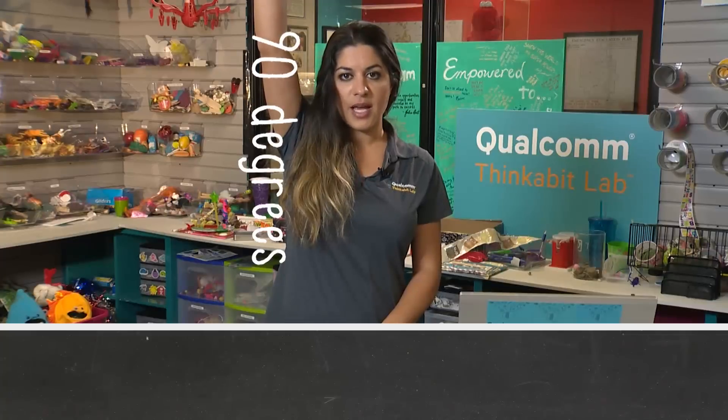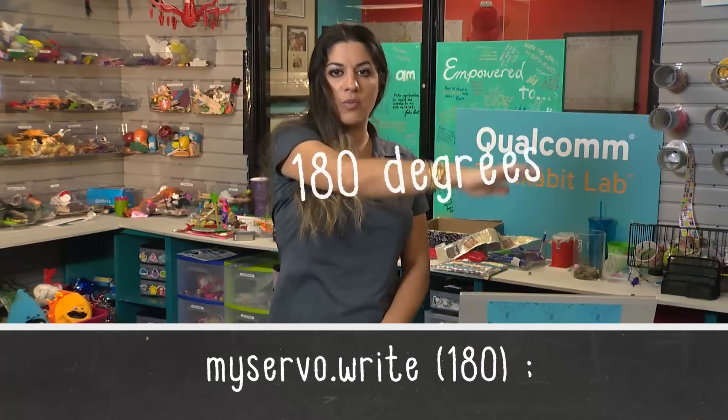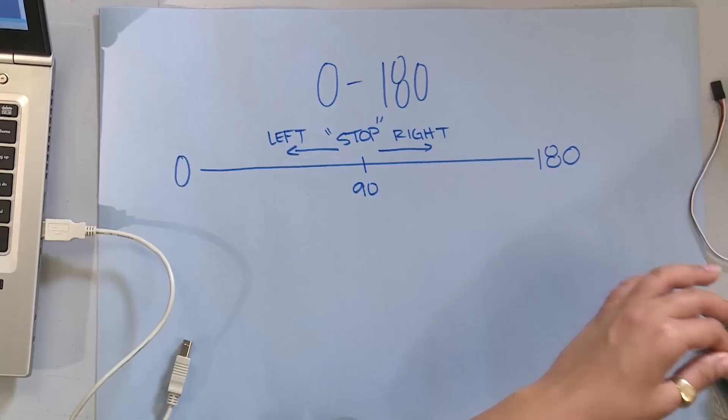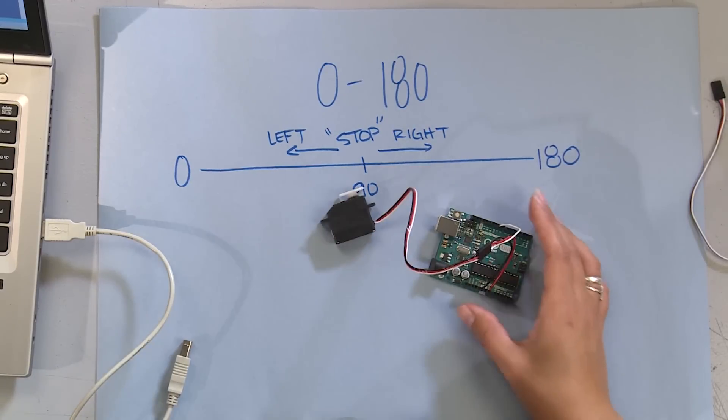If I say myServo.write(180), I go to 180 degrees. So let's go ahead and play around with a couple of examples. I'm going to use the big servo to do this.